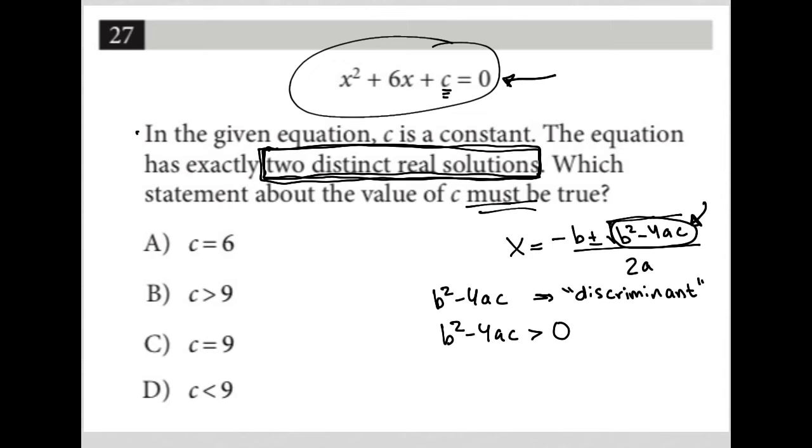And if it equaled 0, under the radical there, we'd actually end up with only a single solution for X, not two distinct solutions for X.